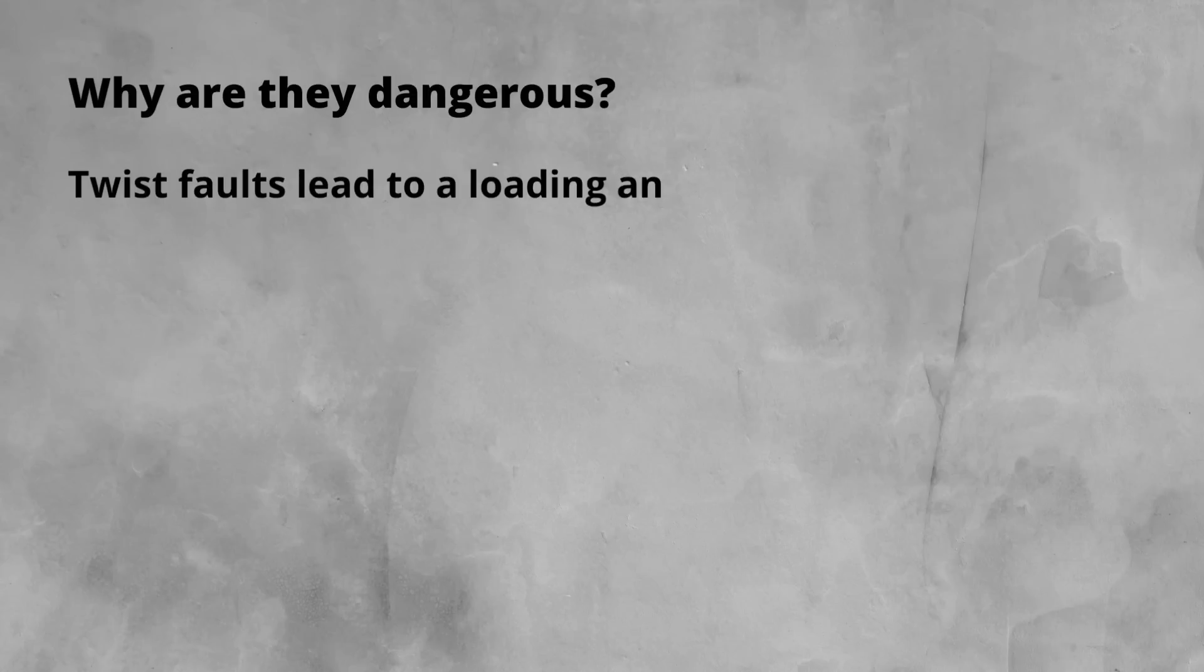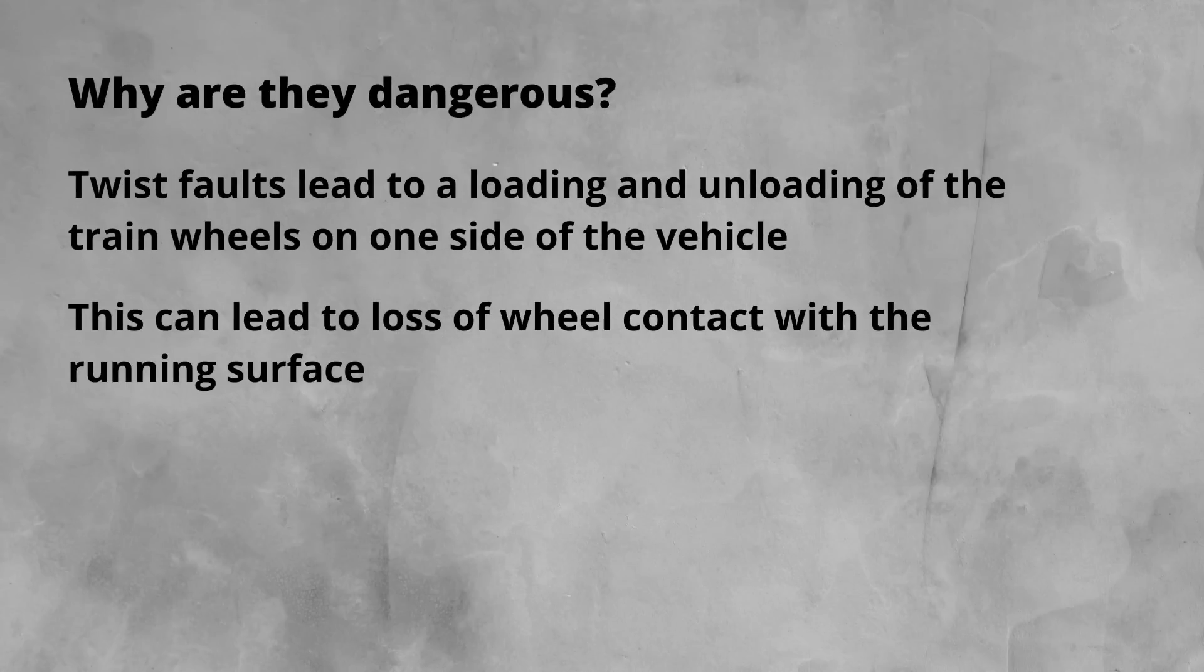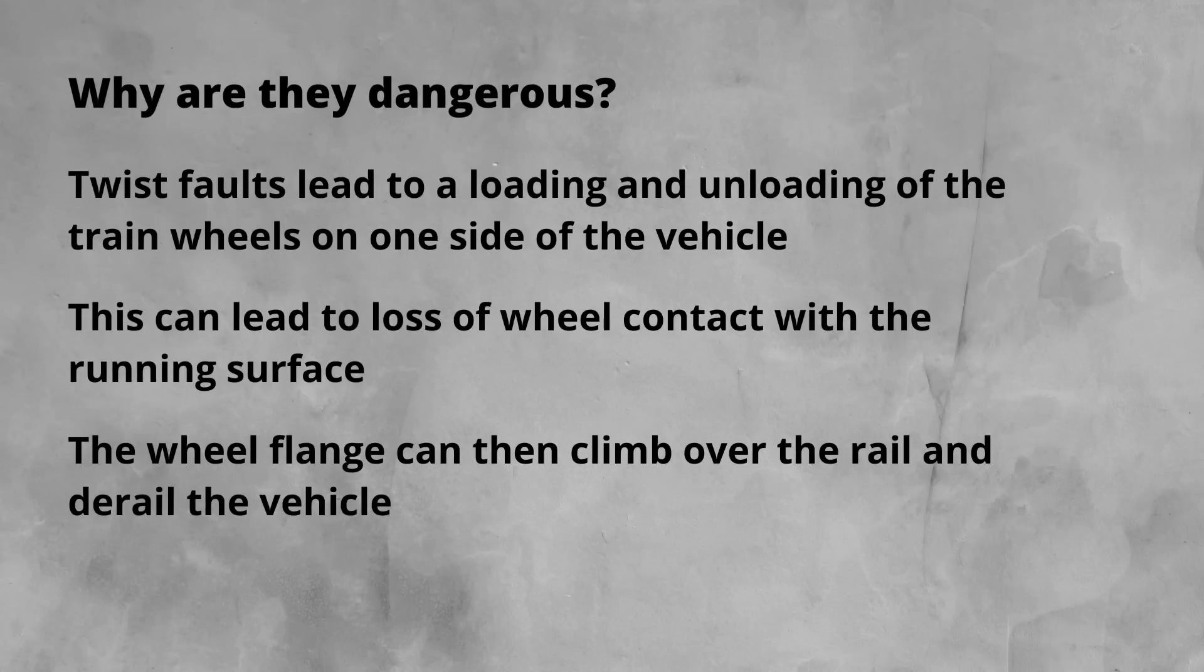Now you know what a twist fault is, let's look at why they pose a risk to trains. The twist fault through a dip in the track causes loading and unloading of one or more wheels on the train wagon. This can lead to loss of contact with the running surface, and in the worst situations, the wheel flange climbing the rail and derailing. This is called a flange climb derailment.